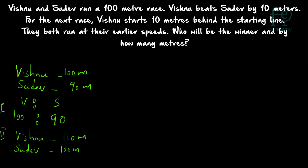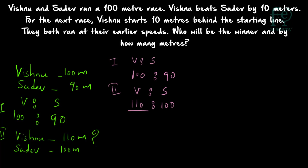As Vishnu is starting 10 meters behind the starting line, he has to run 10 meters extra, so his total race length will be 110 meters and Sudev has to complete only 100 meters to win the race. So the ratio for the first race is Vishnu to Sudev = 100 is to 90, and for the second race, Vishnu to Sudev is 110 is to 100.